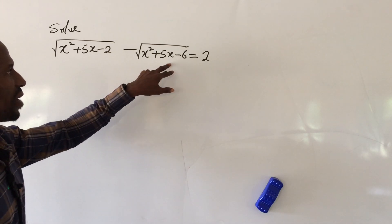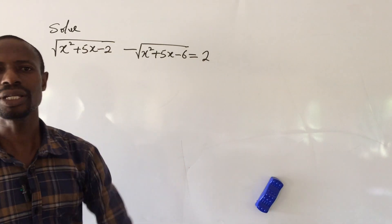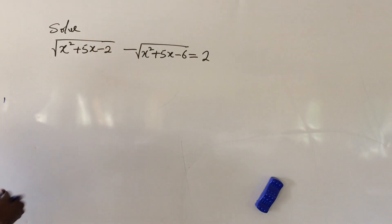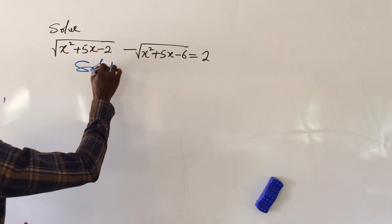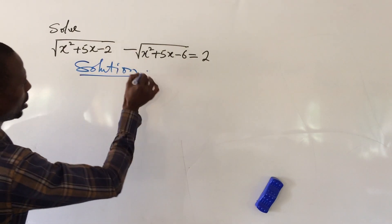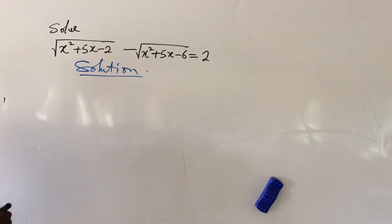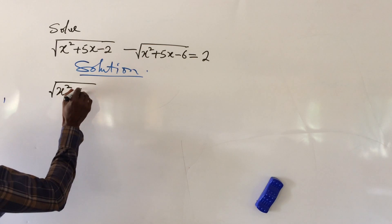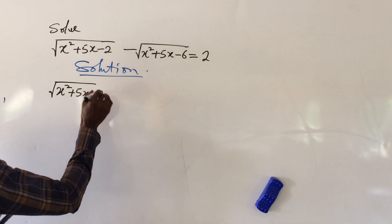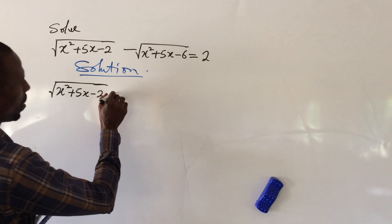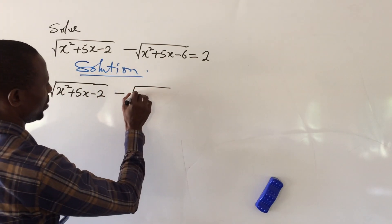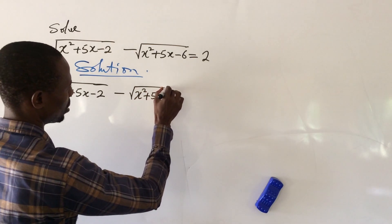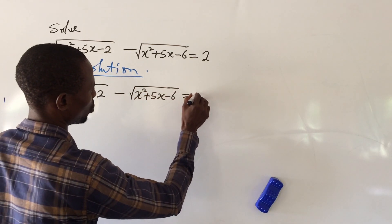We have the square root of x squared plus 5x minus 2, minus the square root of x squared plus 5x minus 6, equal to 2. What will be the value of x? Let's go to our solution without wasting much time. We write down our equation: the square root of x squared plus 5x minus 2, minus the square root of x squared plus 5x minus 6, equal to 2.